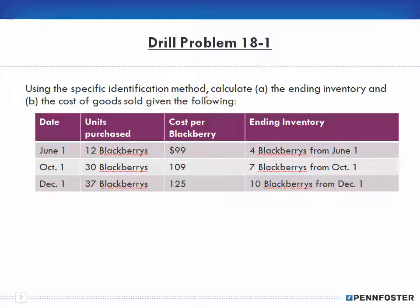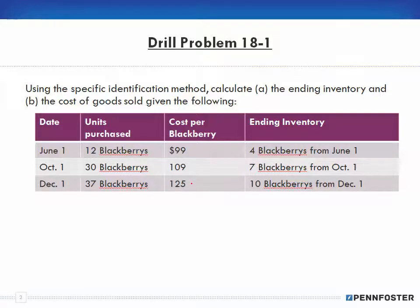Problem 1 says to use the specific identification method to calculate: (a) the ending inventory and (b) the cost of goods sold, given the following information. The specific identification method means that whatever we sell, we're able to specifically identify that item and take it out of inventory. We have dates June, October, December with units purchased: 12, 30, and 37 blackberries, at costs of $99, $109, and $125 respectively.